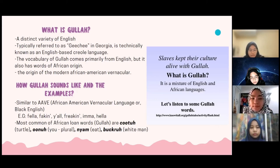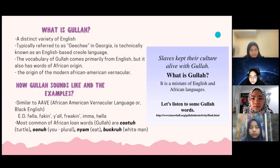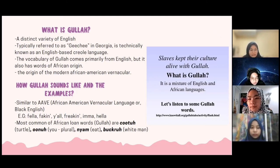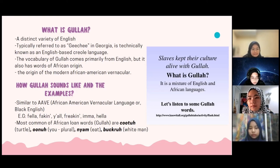If you have ever heard the way Black people talk, you can easily imagine how Gullah sounds. For example, Black people commonly use words like fella, y'all, and hella. In Gullah language, there are also known words coming from African language, such as kotu, which means turtle; onu, which means you in plural form; nyam, which means eat; and bakra, which means white man.